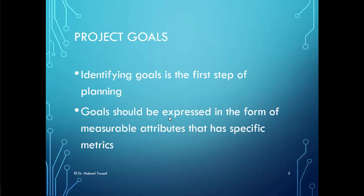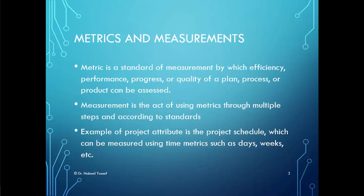Identifying goals is the first step of the planning phase. Goals should be expressed in the form of an attribute or attributes that can be measured using a specific metric. A metric is a standard of measurement by which efficiency, performance, progress, or quality of a plan, process, or product can be assessed. Measurement is the act of using metrics through multiple steps and according to standards.